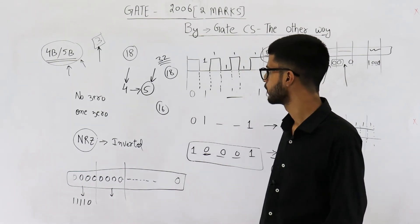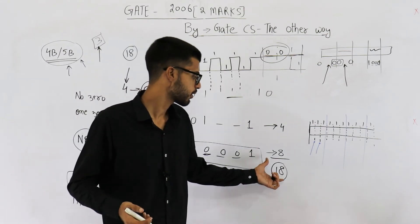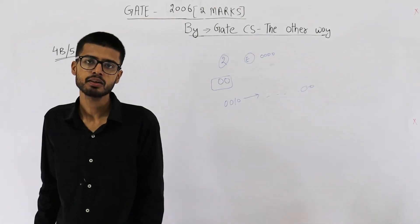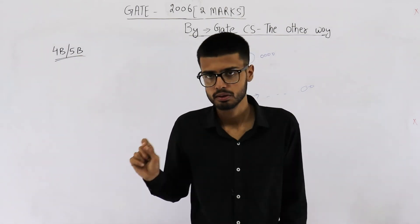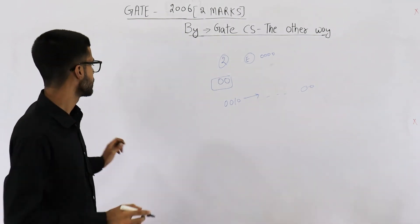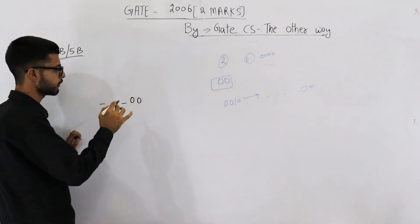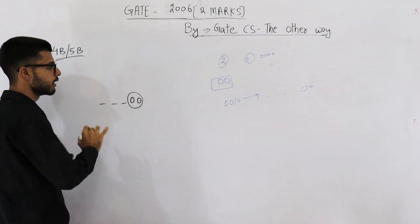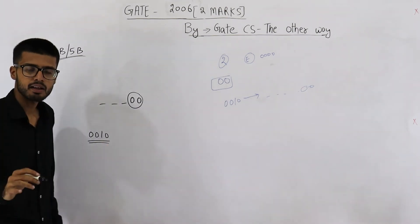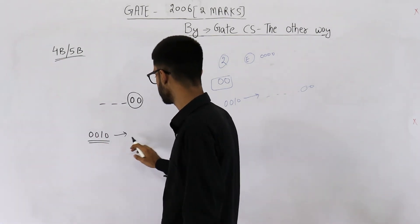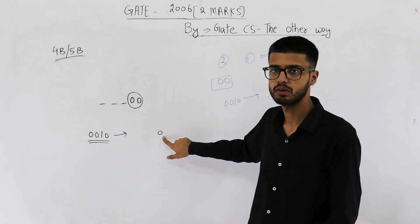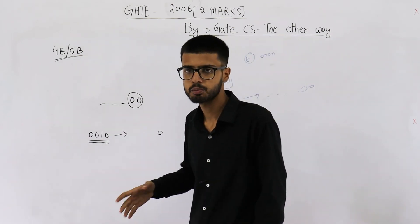The answer to this question is 18 total codewords. One last point: in the question, they allow only up to 1 trailing zero, but in reality, the actual 4b/5b scheme allows up to 2 trailing zeros — for example, the 5-bit encoding of the number 2 ends with two zeros. The question slightly modifies the definition, allowing a maximum of 1 zero only. We go according to the question — if they define it that way, just believe it and solve accordingly.